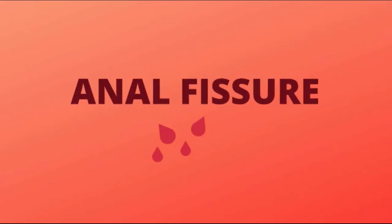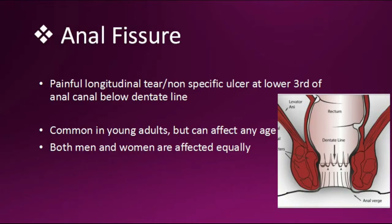Welcome to Med Smashers. Today I'm going to teach you about anal fissure. An anal fissure is a painful longitudinal tear or non-specific ulcer at the lower third of the anal canal, below the dentate line. The dentate line divides the upper two-thirds and lower one-third of the anal canal, and is also called the pectinate line. It is common in young adults but can affect any age, and both men and women are affected equally.